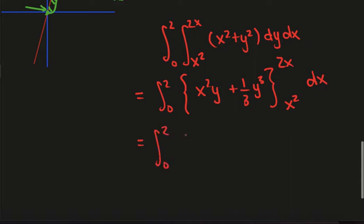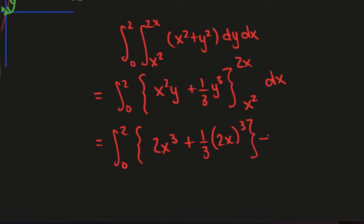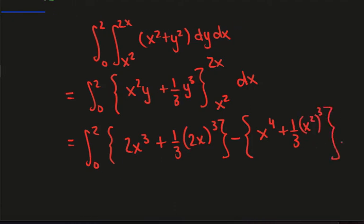So this is integral from 0 to 2. Put the 2x in. I get 2x cubed plus 1 third 2x to the power of 3 minus, put the x squared term in. I get x to the 4 plus 1 third x squared cubed dx.